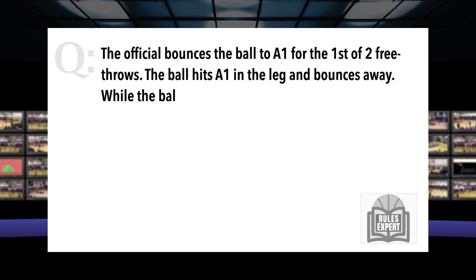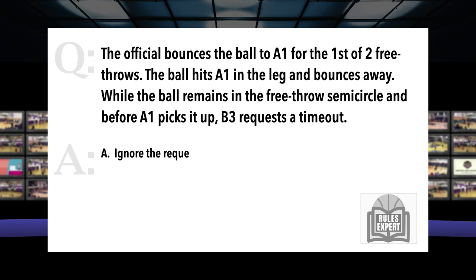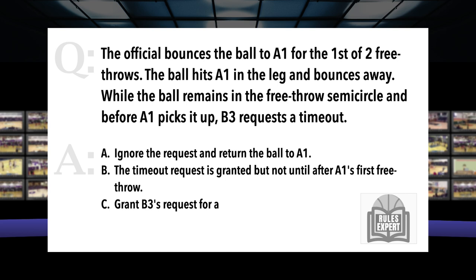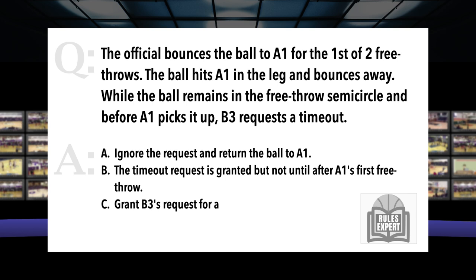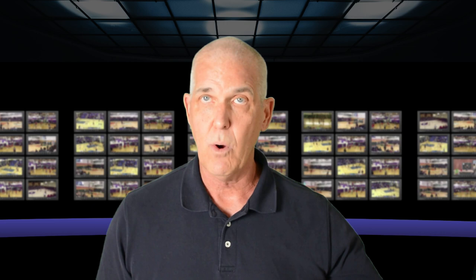Question. The official bounces the ball to A1 for the first of two free throws. The ball hits A1 in the leg and bounces away. While the ball remains in the free throw semicircle and before A1 picks it up, B3 requests a timeout. Our options: A. Ignore the request and return the ball to A1. B. The timeout request is granted, but not until after A1's first free throw. C. Grant B3's request for a timeout at that point. Or D. None of the above. I bounce the ball to the thrower, it bounces off their leg, one of the opponents immediately requests a timeout while the ball is in the free throw semicircle, but before A1 has picked it up. What are we to do?